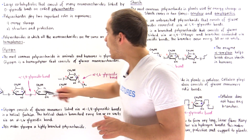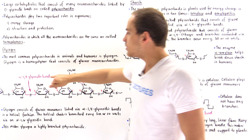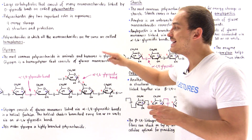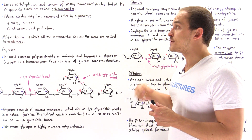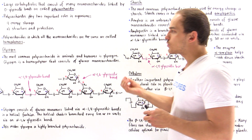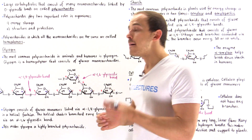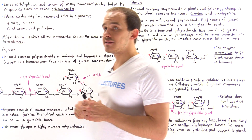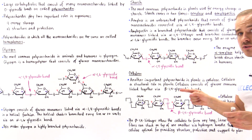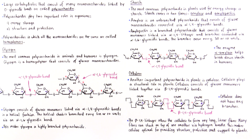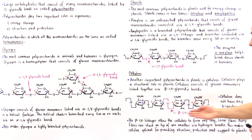In glycogen as well as starch, we have alpha-1,4 glycosidic bonds that create a helical structure, which is perfect for energy storage. In cellulose, however, individual glucose monosaccharides are connected via beta-1,4 glycosidic bonds. As a result of these beta-1,4 glycosidic bonds, cellulose doesn't have a helical structure. Instead, it has a linear structure. The beta-1,4 linkages allow cellulose to form very long, straight-chain linear fibers.